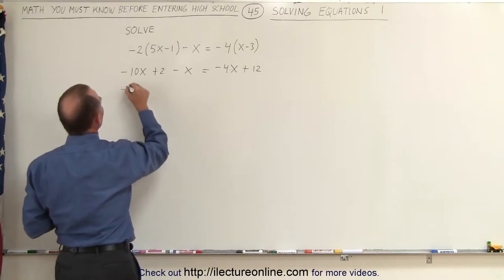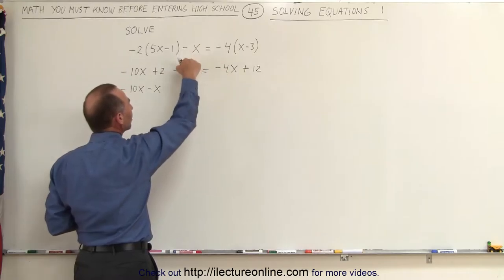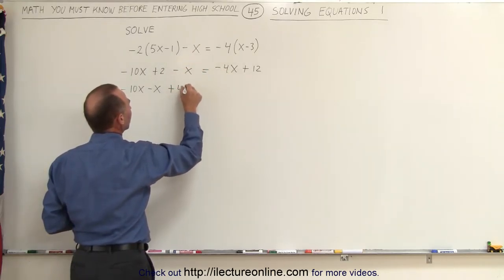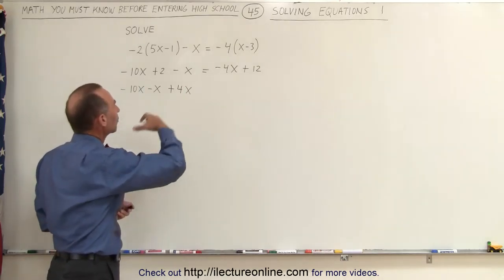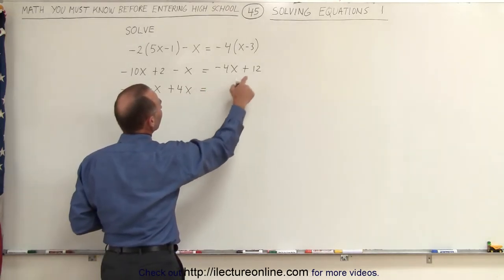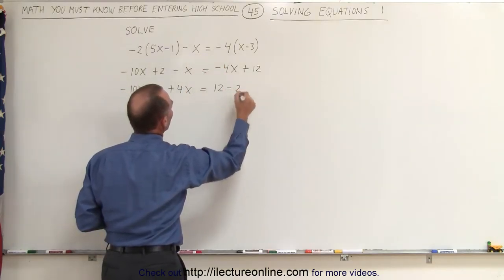So this becomes minus 10x minus x. When we bring minus 4x across the equal sign, that becomes plus 4x. So we always change the sign of whatever term we move across the equal sign. Right, the equal sign there. We still have the 12, and then the plus 2 goes across the equal sign and becomes minus 2.